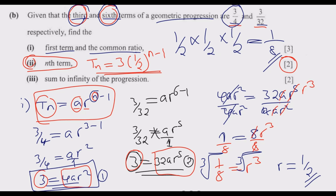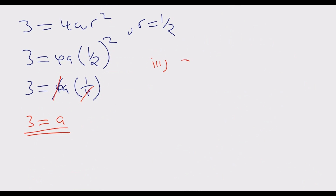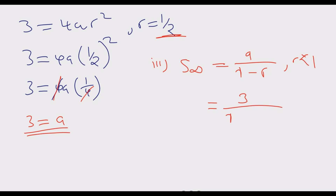For the sum to infinity, the formula is S∞ = a / (1 - r), where r must be less than 1. Since r = 1/2, which is less than 1, we can apply this formula. Substituting: S∞ = 3 / (1 - 1/2) = 3 / 0.5 = 6. So the sum to infinity is 6.